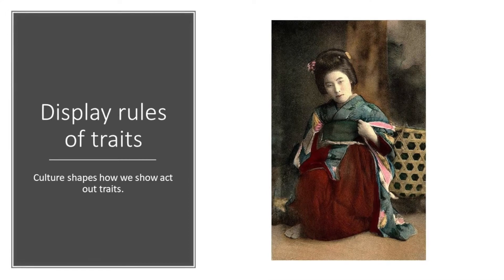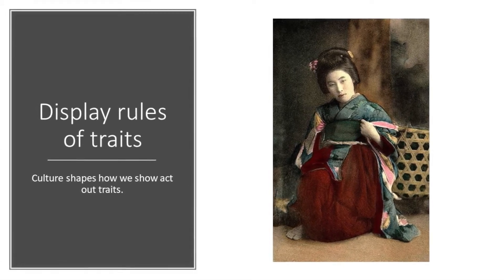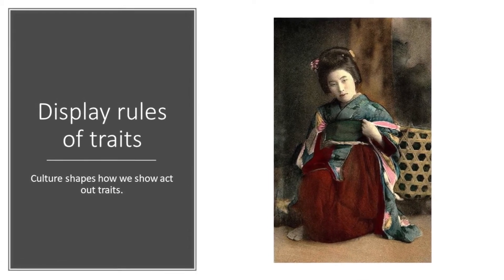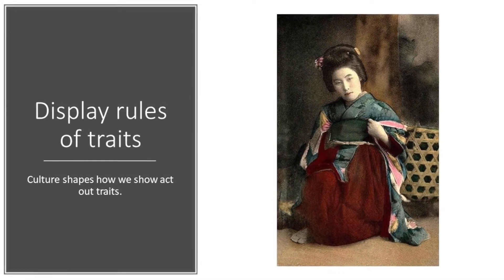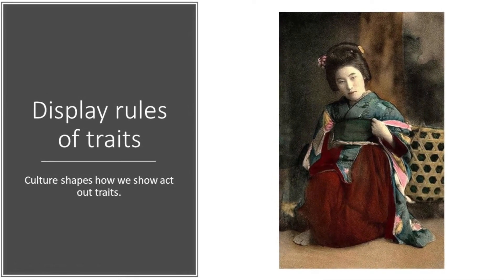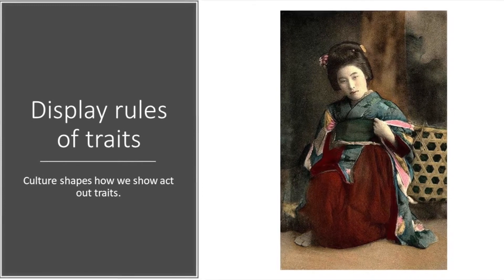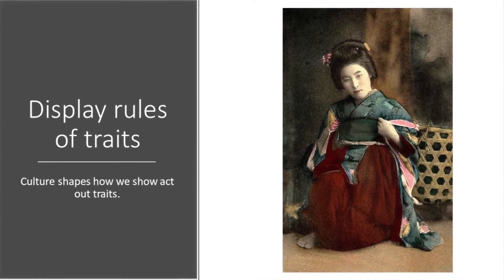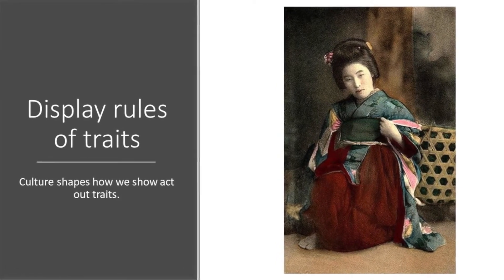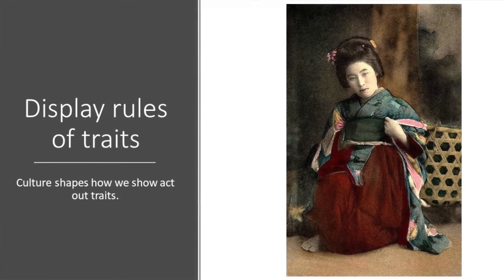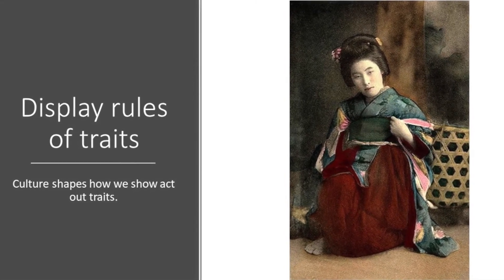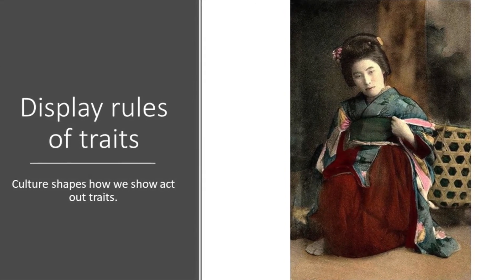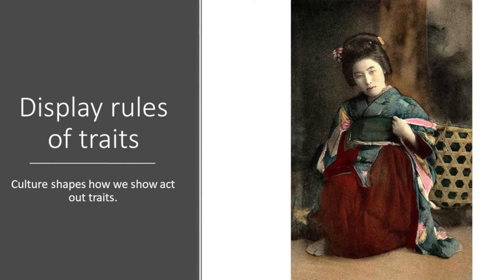Finally, we must consider display rules of traits, since cultures can shape how we show and act out our traits. For example, in Japanese culture, individuals are told not to display too much of their emotional state, so they become more controlled, cool, and formal.